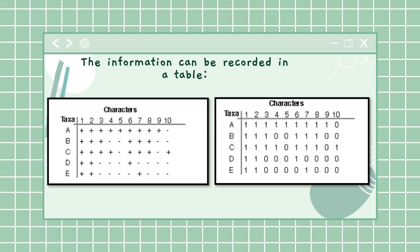You can either tell whether a particular character is present or absent using plus or minus signs - plus indicating it's present and minus indicating it's absent. Or you can use one and zero form - one indicating the trait is present and zero indicating it's absent.